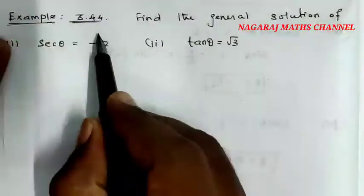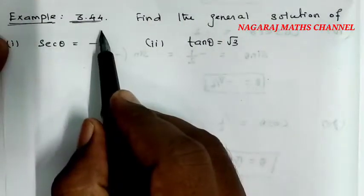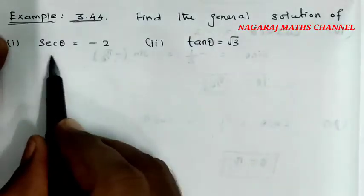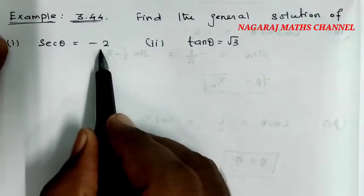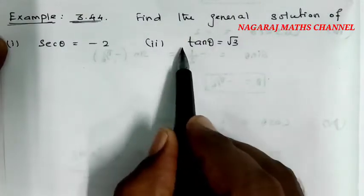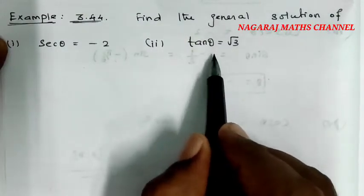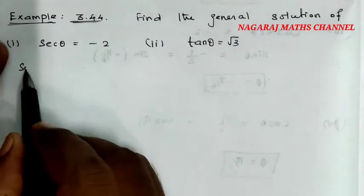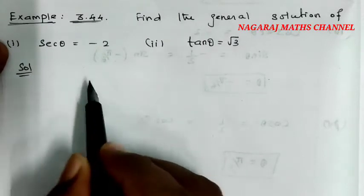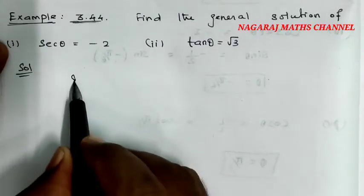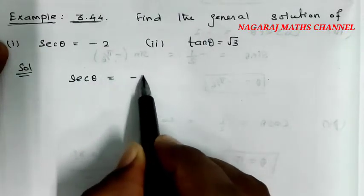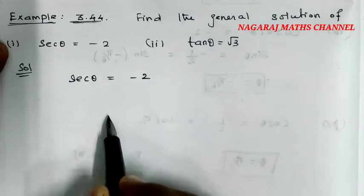This is example 44. Find the general solution where sec θ equals minus 2 and tan θ equals root 3. Let's look at the solution. We have sec θ equals minus 2, which means cos θ equals minus 1 by 2.